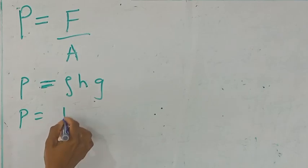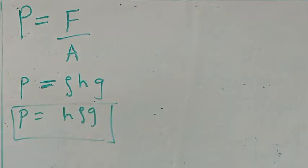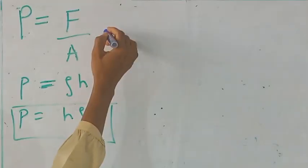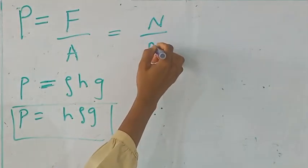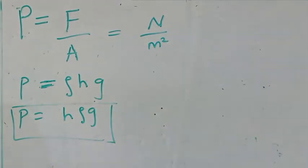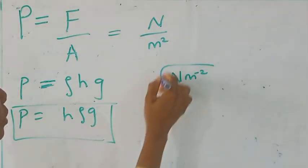Anyhow you want to put it h rho g. Please note it, it's very, very important. The unit of pressure, remember force is a newton and area is a meter square. So the unit of pressure is in newton per meter square.